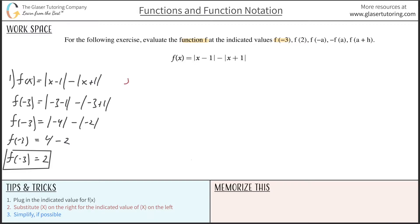Same process now with the second. Rewrite the function f of x is equal to x minus 1 minus x plus 1. And here we have now f of 2. Simply plug in the 2 anywhere you see x on the right hand side. So it's 2 minus 1 minus 2 plus 1.